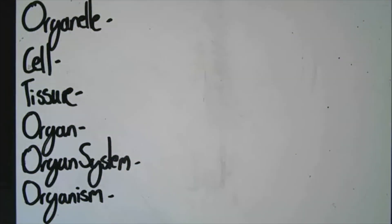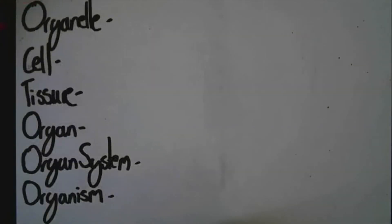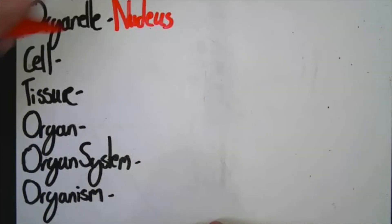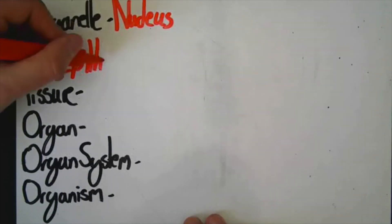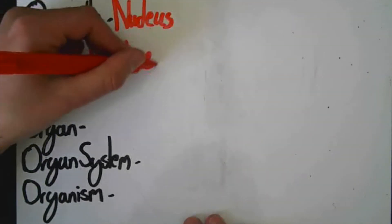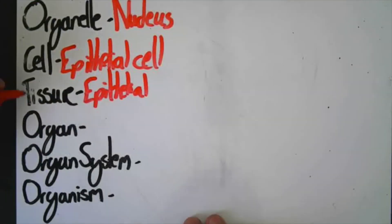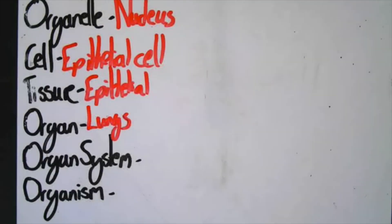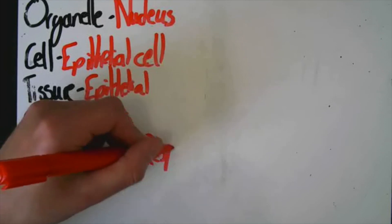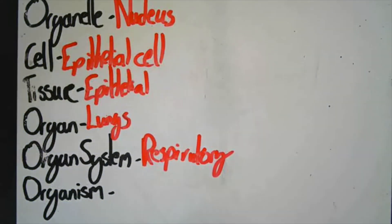To understand how substances move into larger, multicellular organisms, we need to understand how these organisms are organised. Last week, we looked at organelles and cells. We looked at the nucleus, an organelle that contains genetic information and controls the cell. A type of cell which contains a nucleus is called an epithelial cell. The epithelial cell forms an epithelial tissue, and part of the organ that this forms is part of the lungs. And the lungs form the organ system of the respiratory system. This is what we need to have efficient gas exchange in larger, multicellular organisms such as humans.